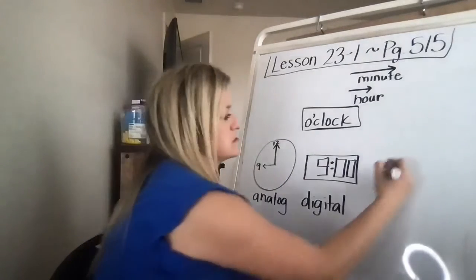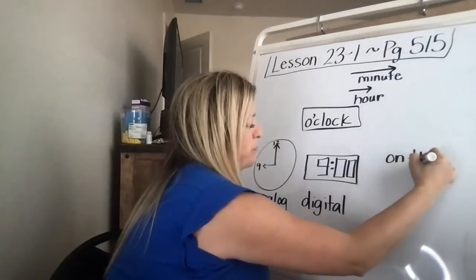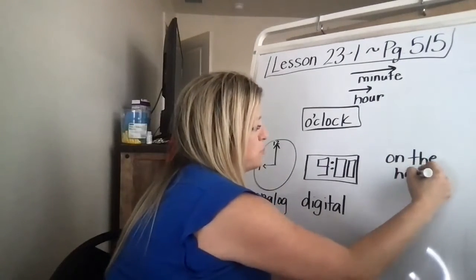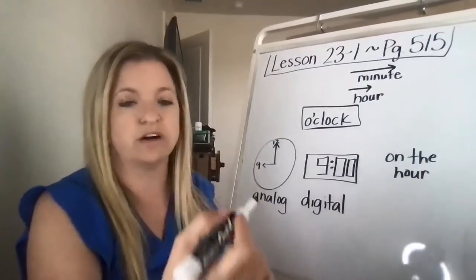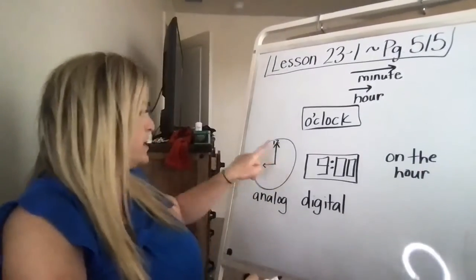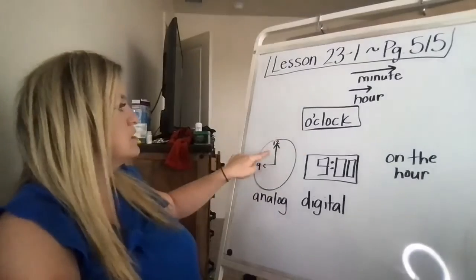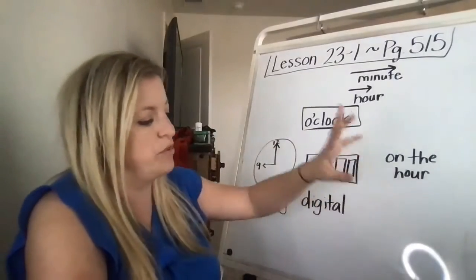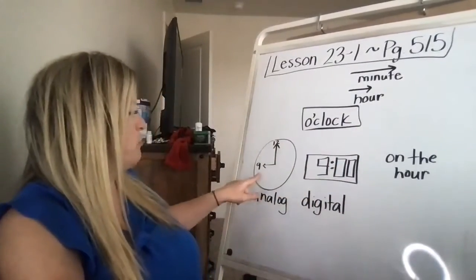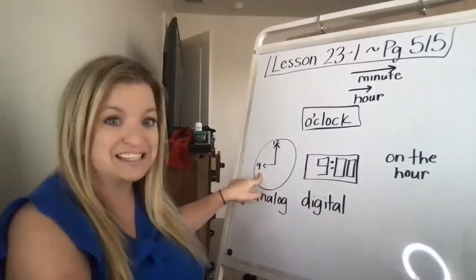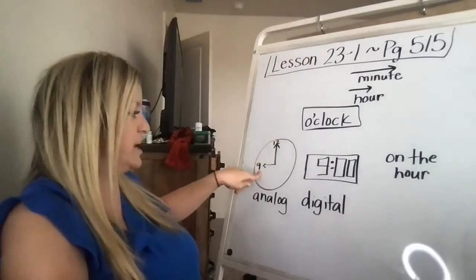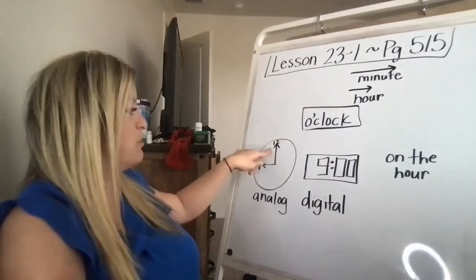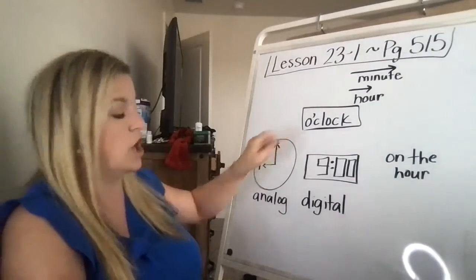And then o'clock means on the hour. It doesn't say on the 12 because the 12 is the hour. Hour is the 12. Same thing. So whenever you hit 12, it's a new hour. So it means on the hour or when the hour starts. So before nine o'clock, it was 8:59, 8:58. It was not quite nine. So now it's on the ninth hour when it hits that 12 o'clock.